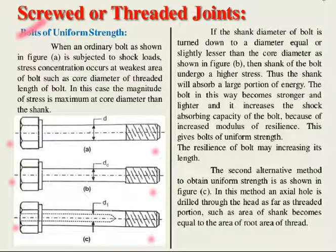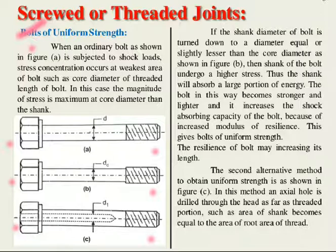Let's start with the initial point — bolts of uniform strength. When an ordinary bolt as shown in figure A is subjected to shock loads, stress concentration occurs at the weakest area of the bolt, such as the core diameter. The magnitude of stress is maximum at the core diameter.